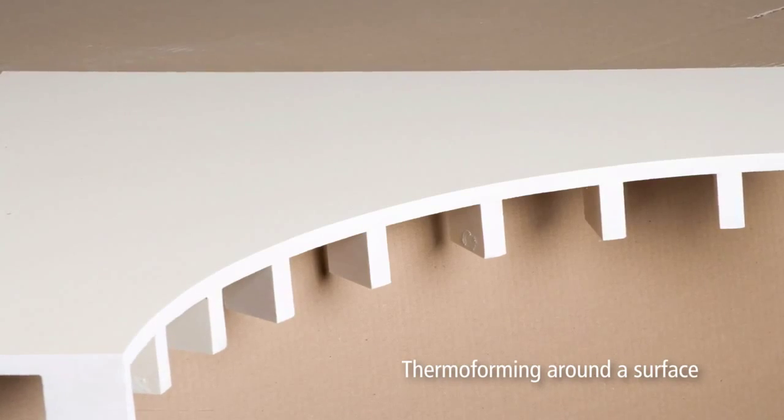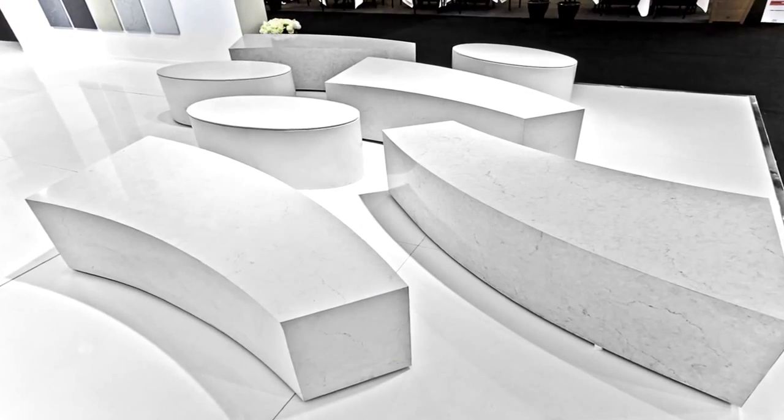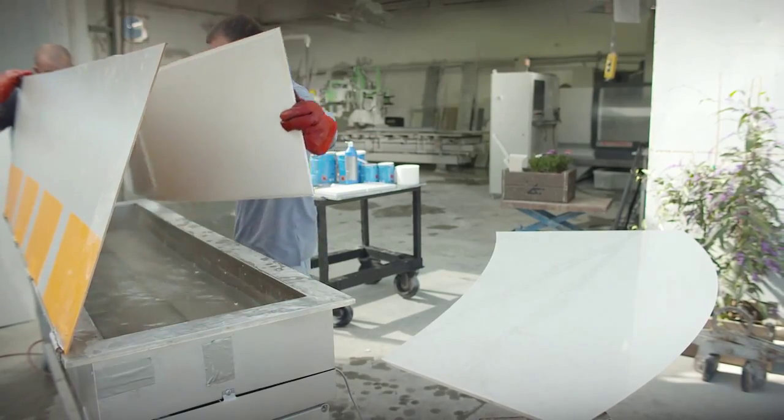Now we'll show you the thermoforming around a surface technique, which is used to create coffee tables like this one. Take the heated, flexible Caesarstone out of the tank and lay it on a flat surface.